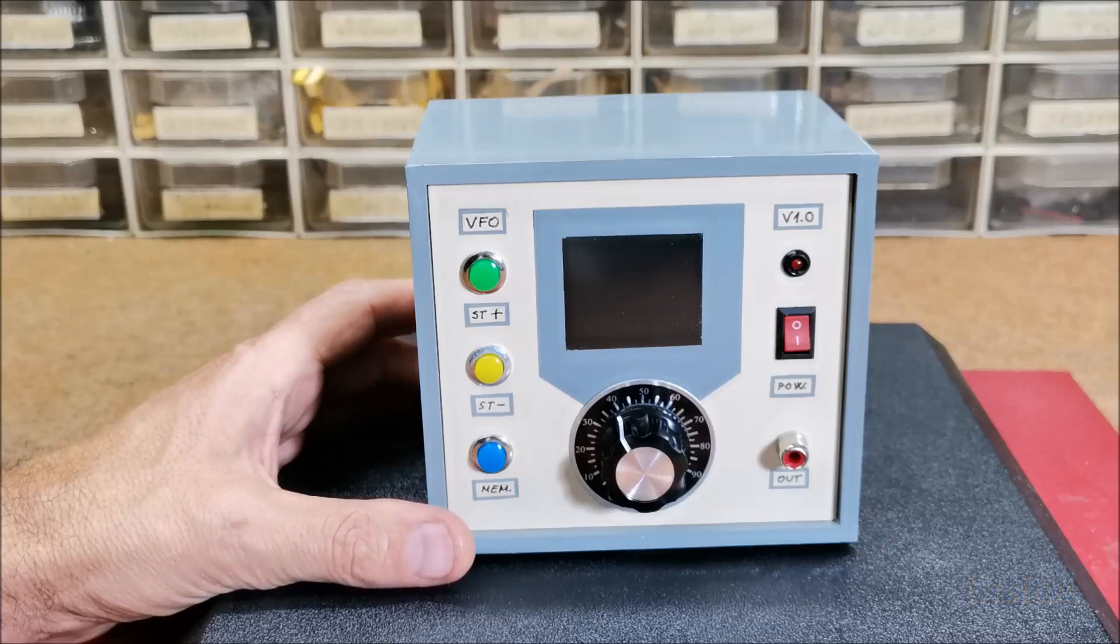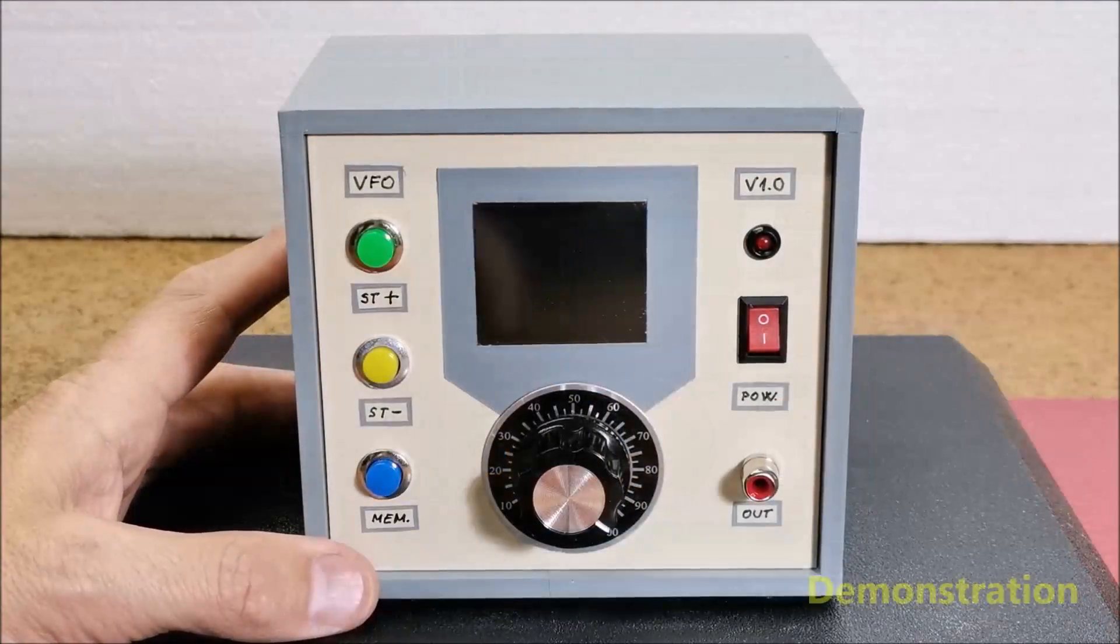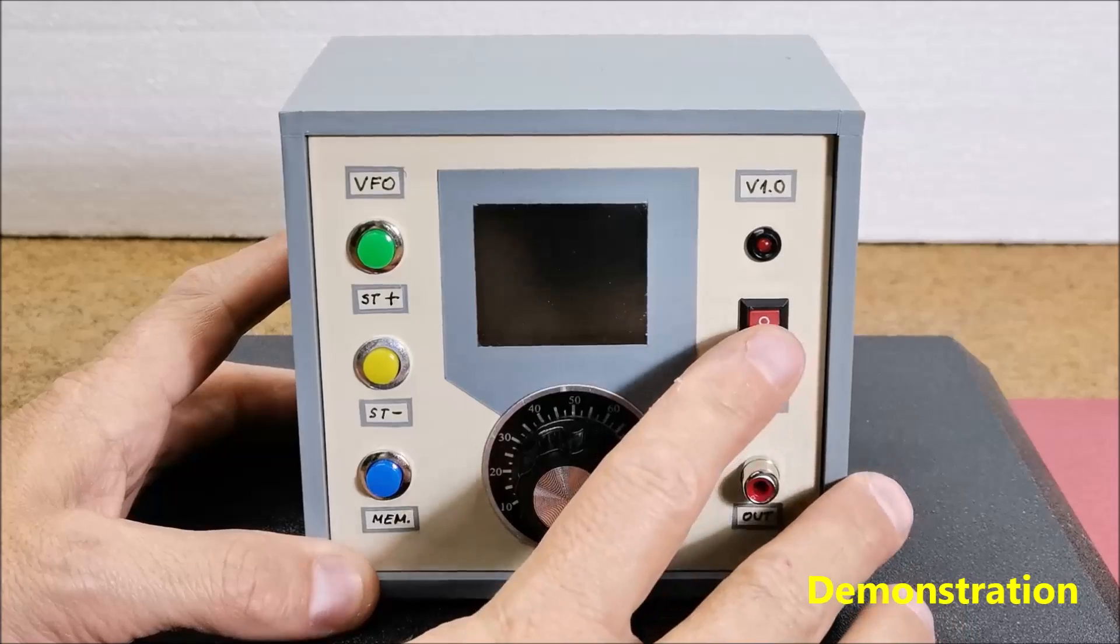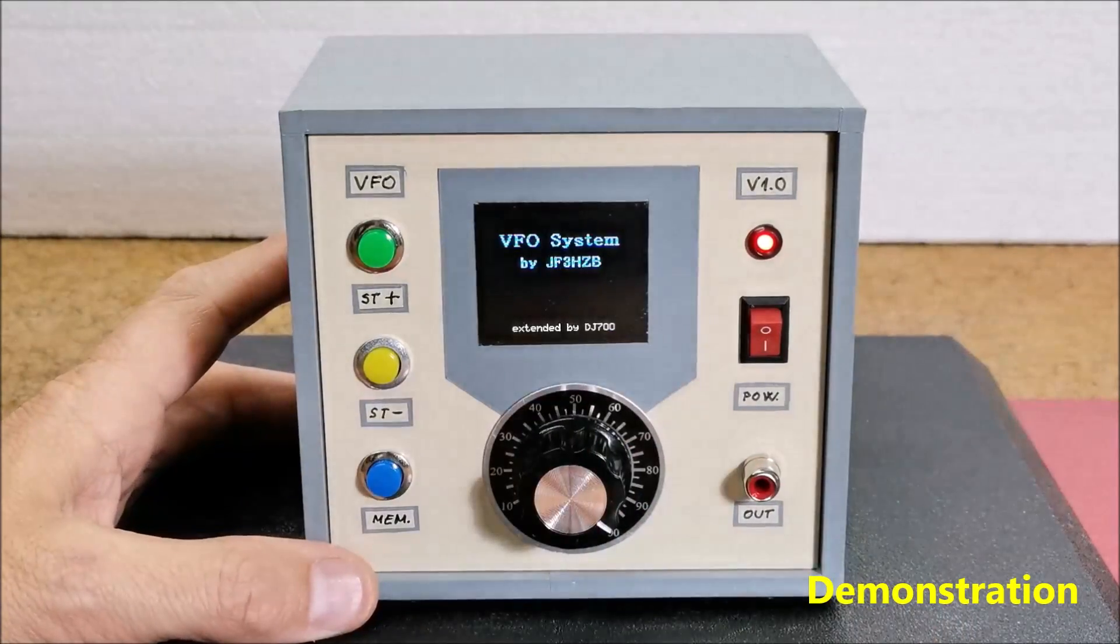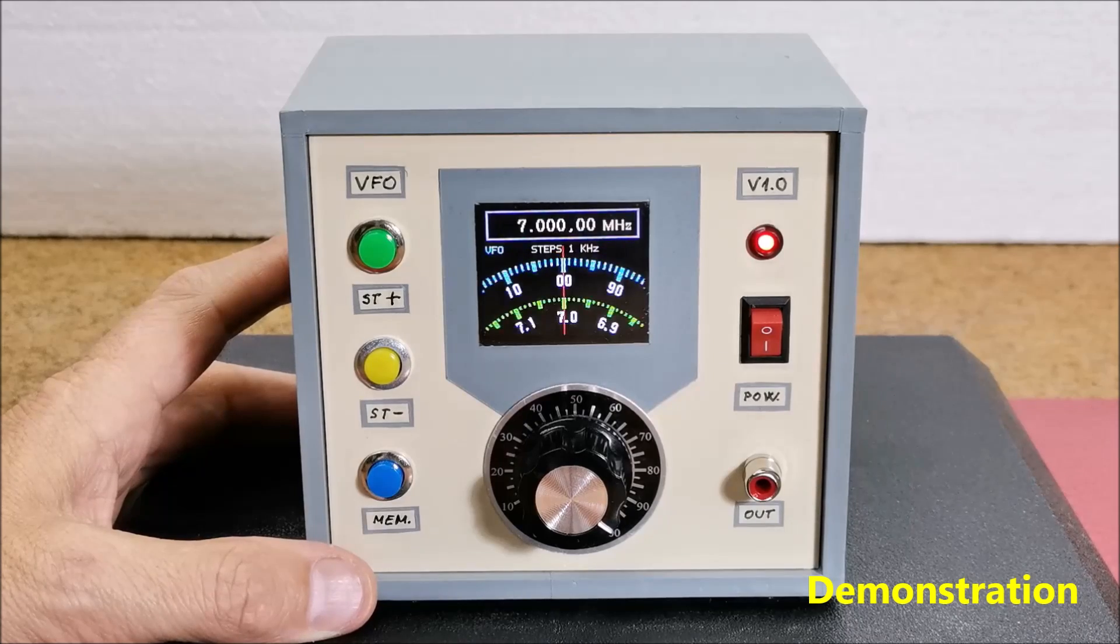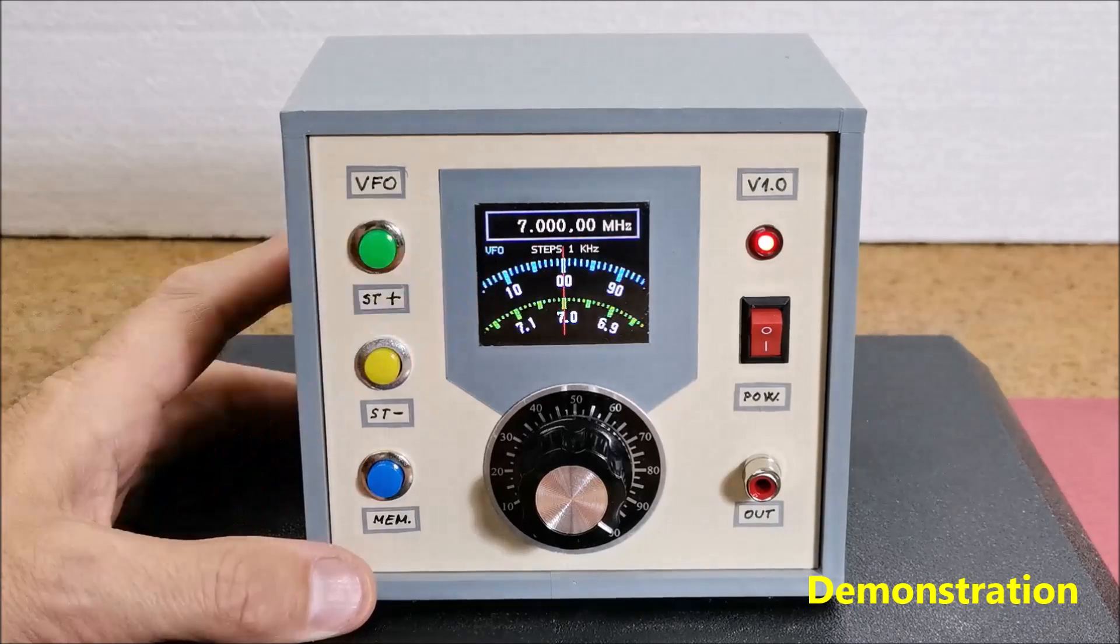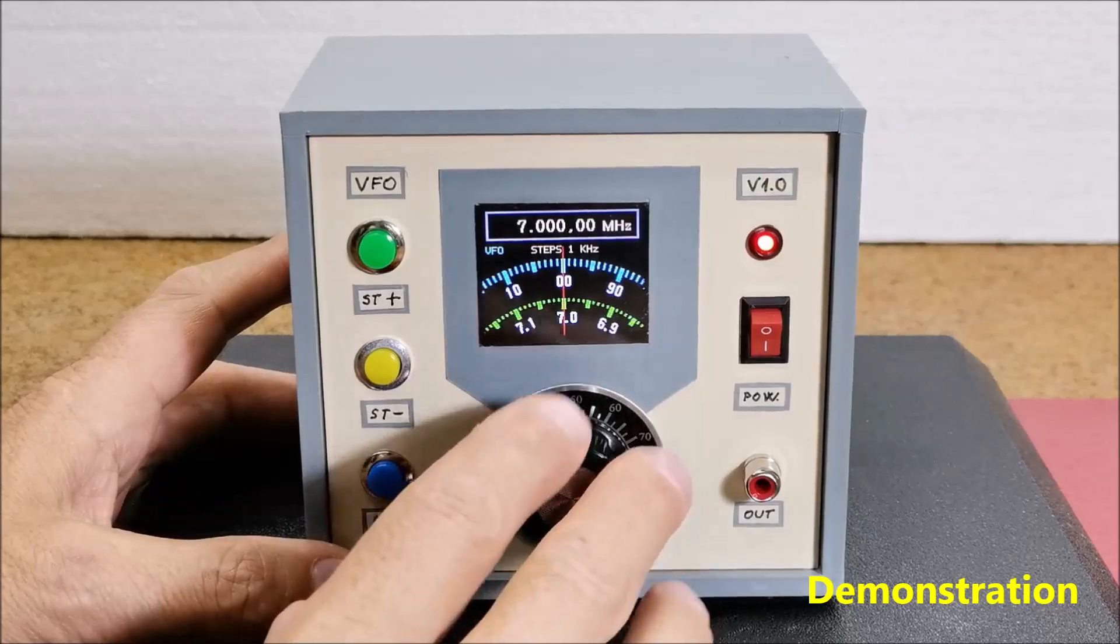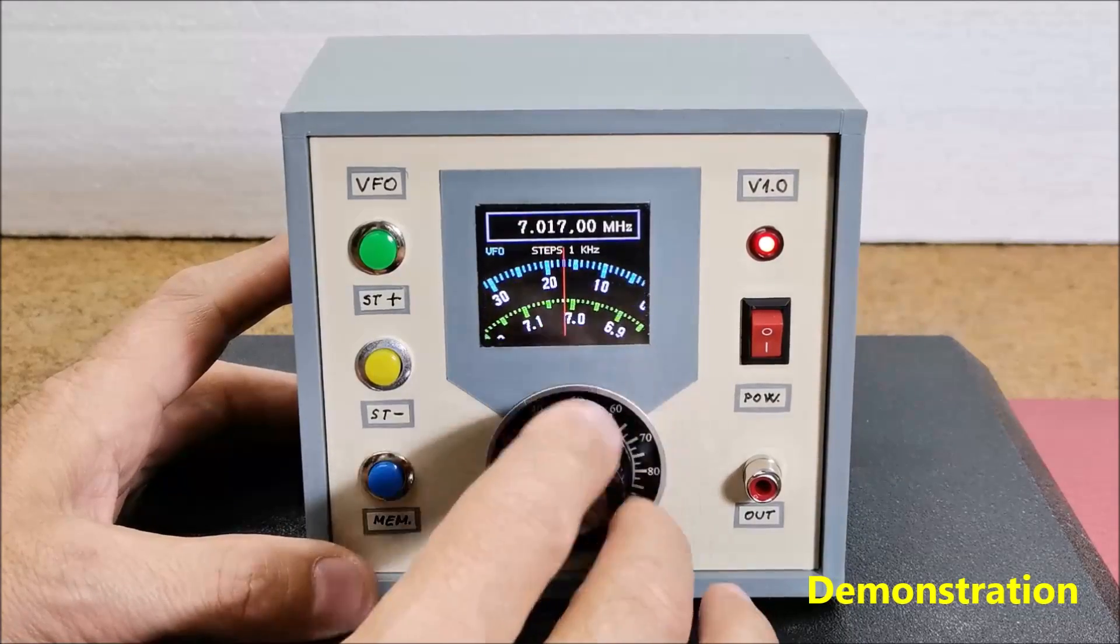Now let's see how the device works in reality. Immediately after switching on, the start frequency that is previously defined in the code appears on the screen. In our case that is 7 MHz. Turning the rotary encoder changes the frequency.